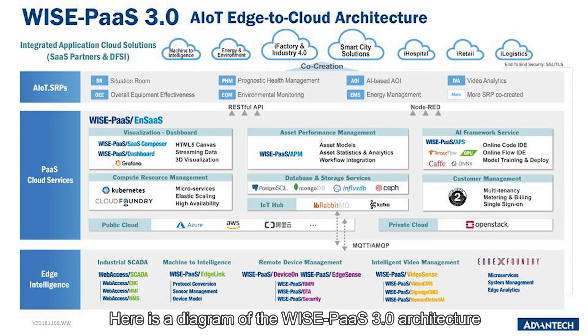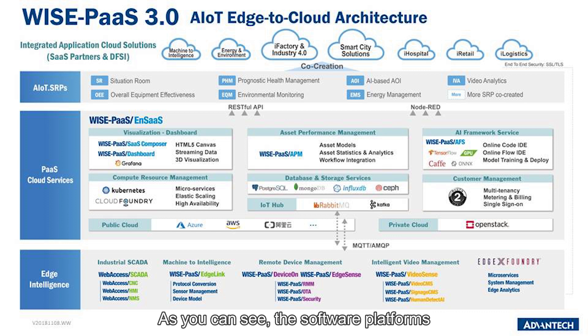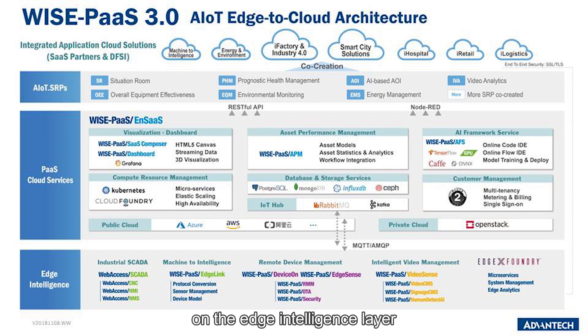Here is a diagram of the WisePass 3.0 architecture. As you can see, the software platforms previously mentioned are located on the edge intelligence layer.